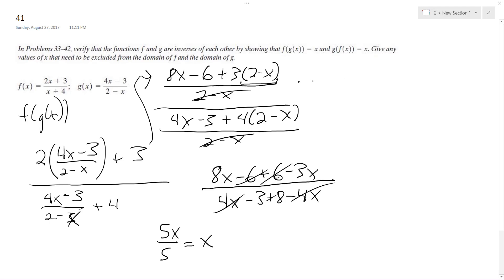Alright, the exact same principle for g of f of x, except it's just the reverse. So 4 quantity 2x plus 3 over x plus 4 minus 3, 2 minus 2x plus 3 over x plus 4. Alright, and then we get, I'm going to multiply this out.